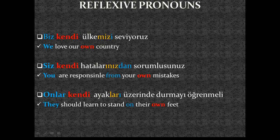For first person plural: 'Biz kendi ülkemizi seviyoruz' — we love our own country. The possessive adjective bizim (our) is dropped. Ülkemizi is in accusative because 'our country' is in the object position. So: biz = we, kendi = our own, ülkemizi = country (with possessive suffix + accusative).